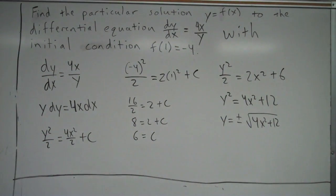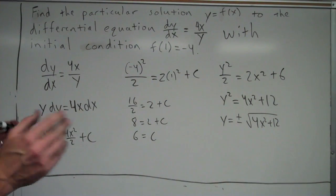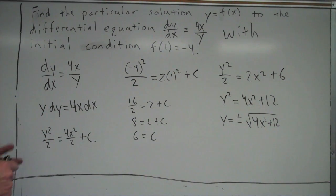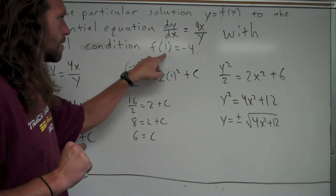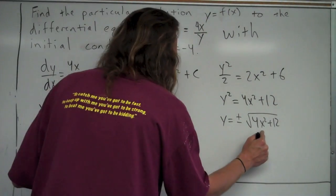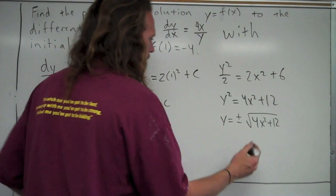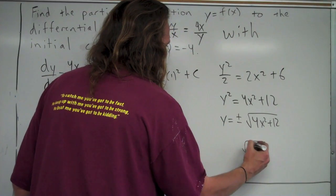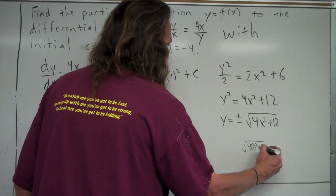I notice I put the plus or minus, because when you're solving an equation, when you take the square root, you always put plus or minus there because both of them could be the answer to the equation. But going back to my initial condition, 1, negative 4, I've got to make sure that that initial condition works with my final answer. So if I plug 1 in for x, I'd get square root of 4 times 1 squared plus 12. So it's going to be 4 plus 12, so it ends up being square root of 16, which is 4.